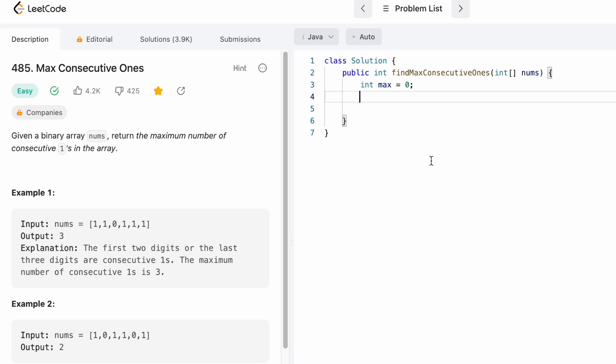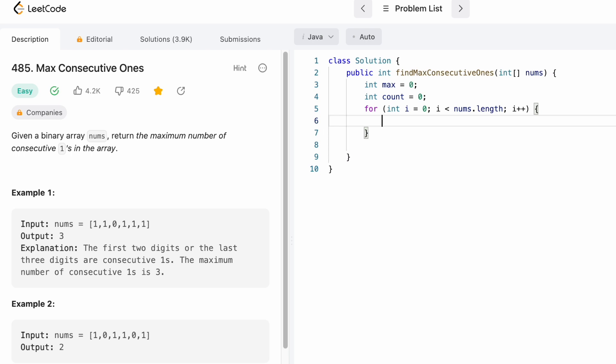Again, I'm going to create a variable count which will be used to count the number of ones in each set. Now let's iterate through the input array nums using a for loop from starting to end. We have to check if the element at the i pointer is a 1 or not.